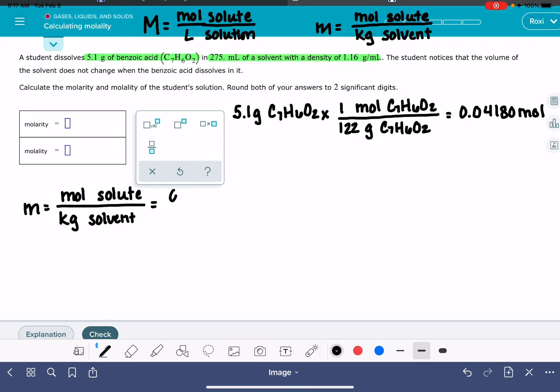So the moles of the solute is 0.04180. And for the solvent, what we're going to do is take the volume of the solvent, 275 milliliters. I'm getting that from right here. And we're going to use its density to convert from milliliters to grams, 1.16 grams for every one milliliter. And then we're going to do one more conversion to get it into units of kilograms. One kilogram is 1,000 grams.